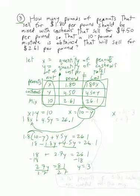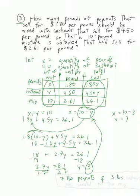Since y equals 3 and x equals 10 minus y, we get x equals 10 minus 3, or x equals 7. That means 7 pounds of peanuts and 3 pounds of cashews are needed for the mix.